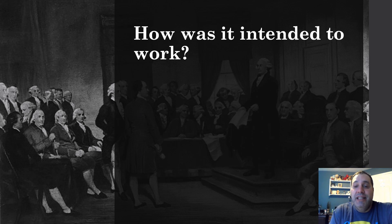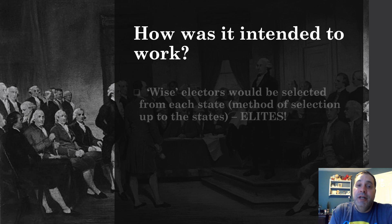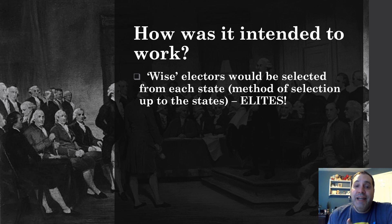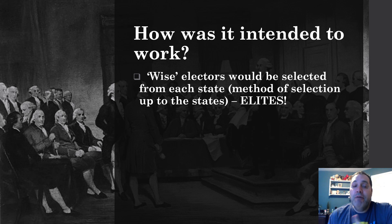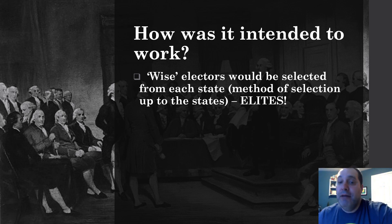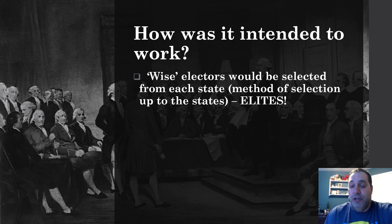So how was it intended to work? They thought the electors would be these wise individuals. Each state would choose them — today it's done by popular vote — but whoever was chosen through whatever method would be well-respected citizens, essentially elites, people like the founders themselves, who would be able to make a much wiser choice of who would make a good president.